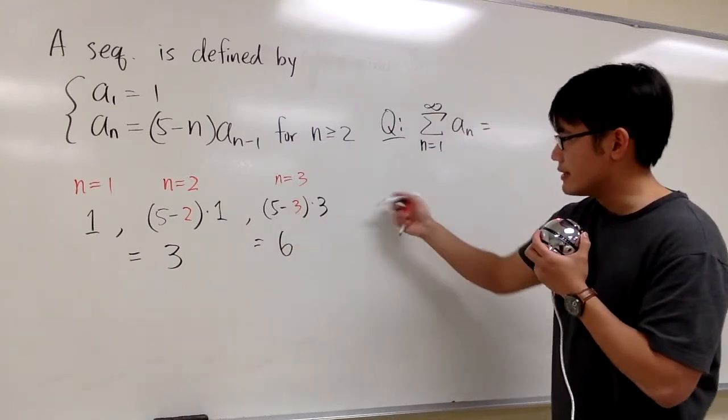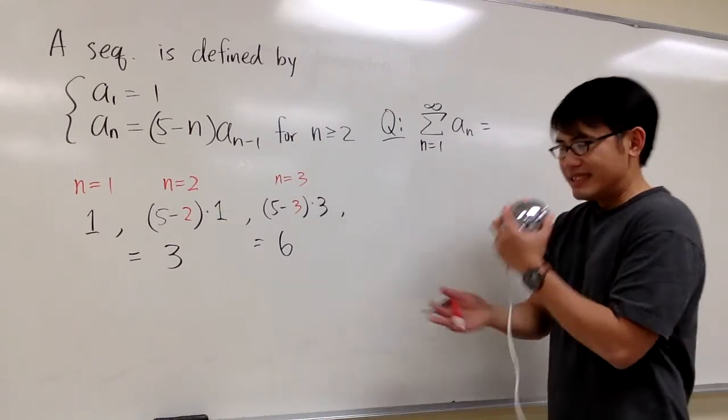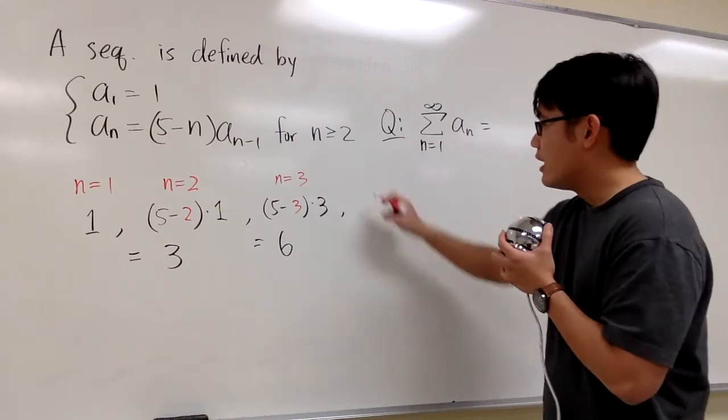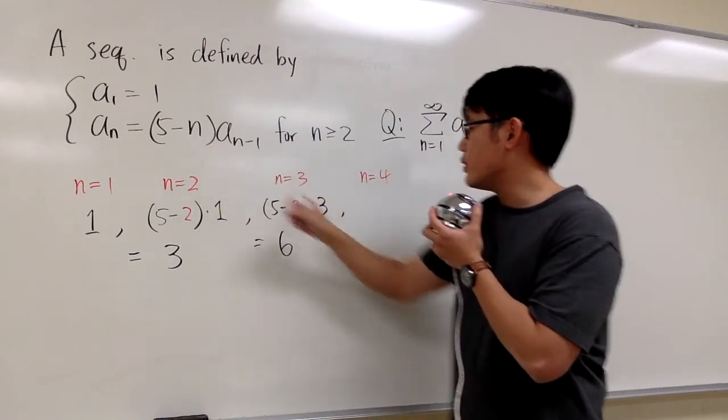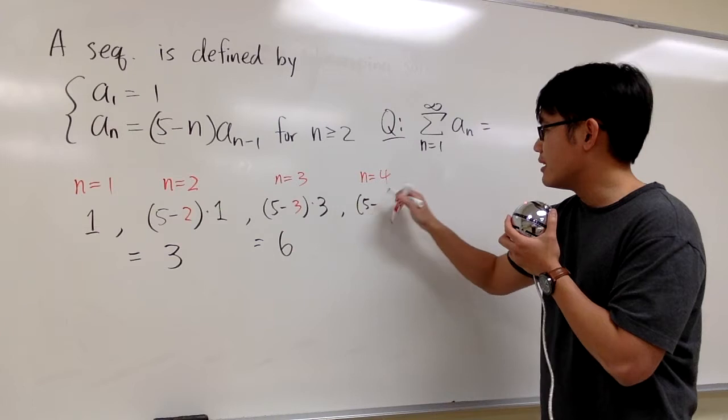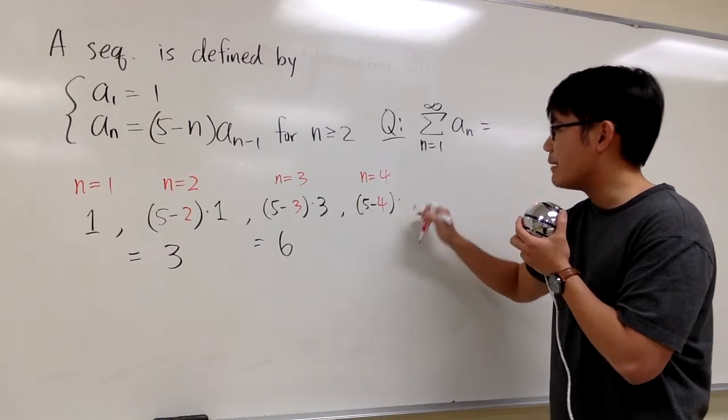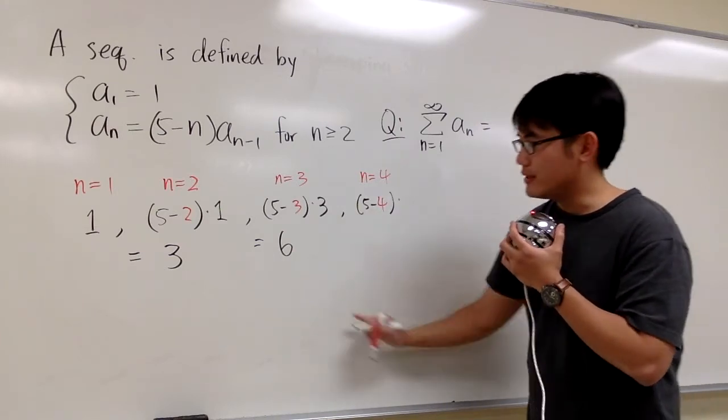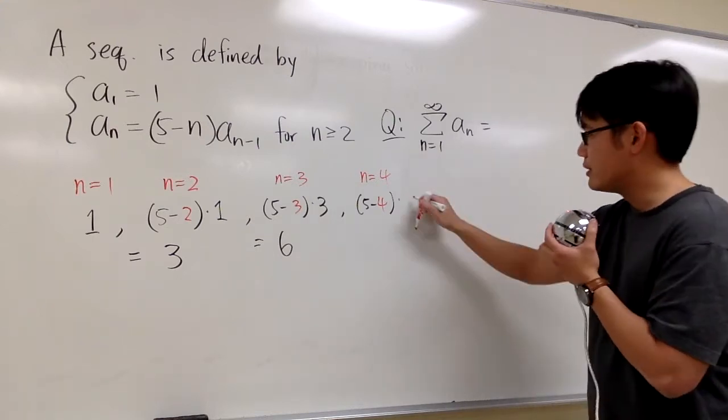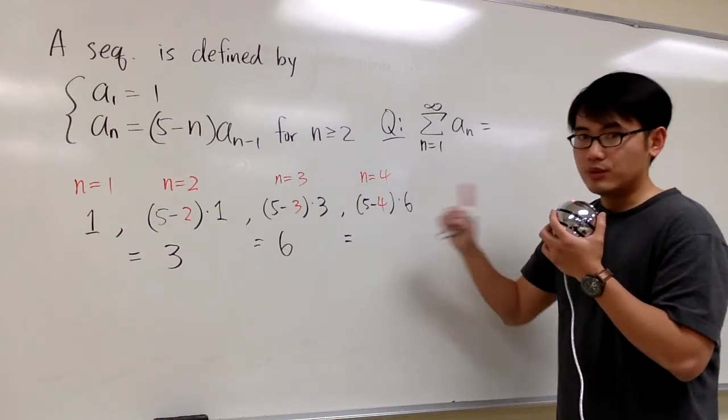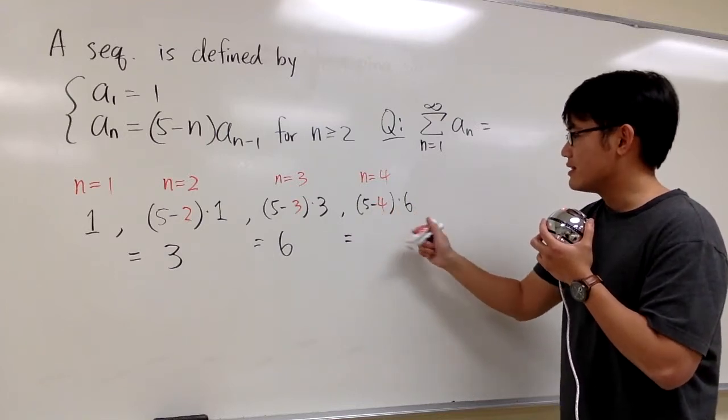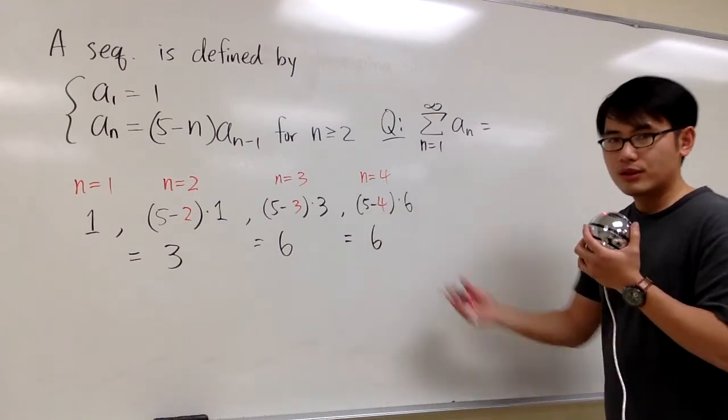Alright, let's continue, because I still don't really see what's going on yet, right? For the next one, we have n is equal to 4. Plug in 4 into here, we have 5 minus 4, and then times the previous term, which is the 6 right here. So, let's put down the 6, and then let's work out 5 minus 4 is 1. 1 times 6 is 6. So far, so good.